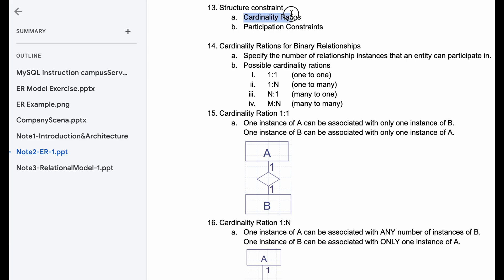First, we're going to look at cardinality ratios. We have cardinality ratios for binary relationships, which is what we're studying. We need to specify the number of relationship instances that an entity can participate in.